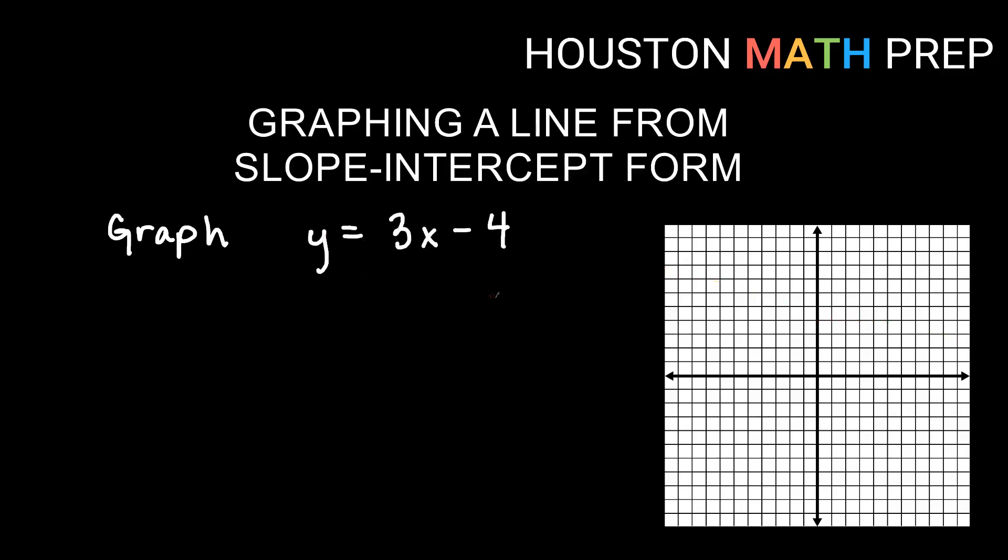Here we have y equals three x minus four. So for this one, starting at b, b is negative four. So negative four on the y-axis would mean down four. So we'll go down one, two, three, four, and plot our y-intercept. That's one point.